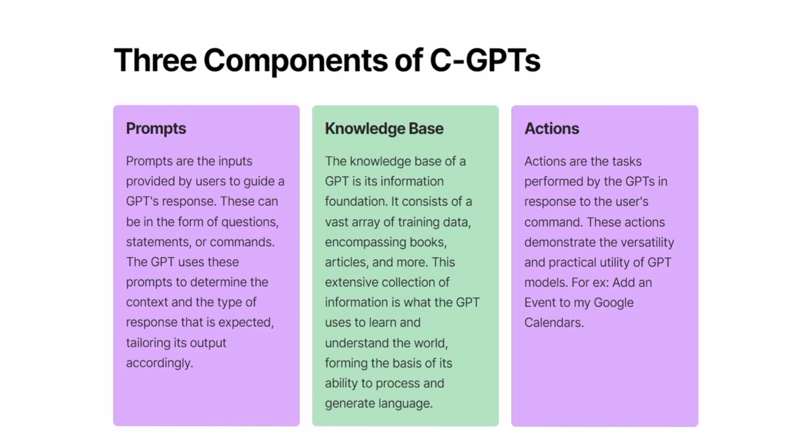The last component is actions. Actions are the tasks performed by the GPT in response to the user's command. Actions are what make the bot advanced as well as complex. They save us time and effort and increase productivity. For example, you could ask the bot which meetings are scheduled for the day, or add an event to Google Calendar. It does the work in seconds that would have taken you around five minutes to do.